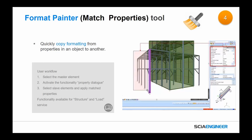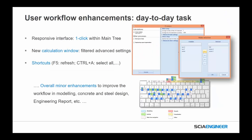We now have included the format painter — the match properties tool — which is the ability to quickly copy formatting from the properties of one object to another. You select a master object, activate the functionality using the paintbrush tool located in the properties of the element below the filter tool, and then choose the element you want to match properties to. The functionality is mainly available for the structure and load services. Other usability improvements for day-to-day tasks include one-click interface in the main tree, the new calculation window, keyboard shortcuts for running results or refreshing the analysis, and minor improvements in modeling, concrete and steel design, and the engineering report.